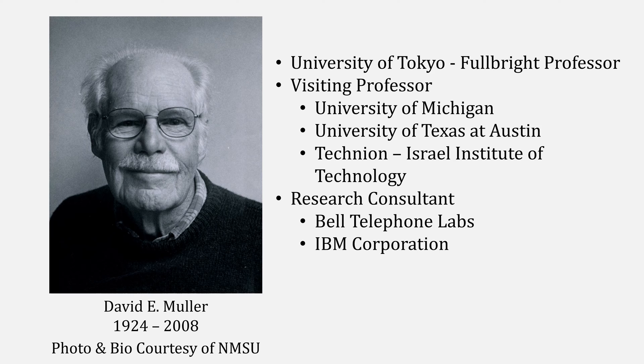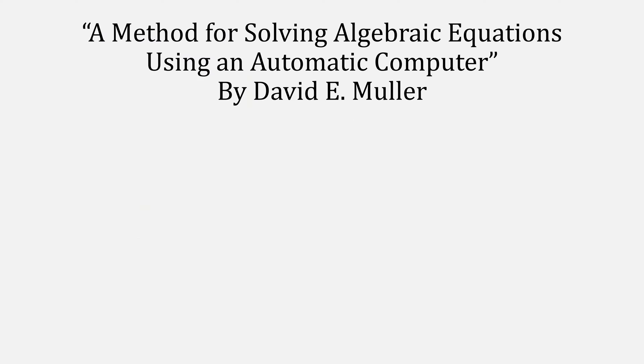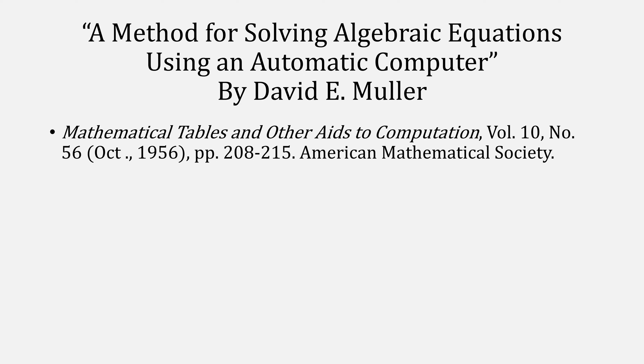He was also a consultant for Bell Labs and IBM and published more than 50 papers throughout his career, one of which became known as Muller's method, a method for solving algebraic equations using an automatic computer. It was published by the AMS in 1956 and has been cited more than 700 times.